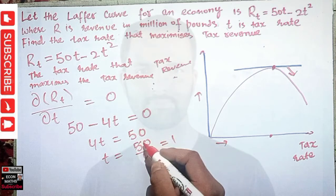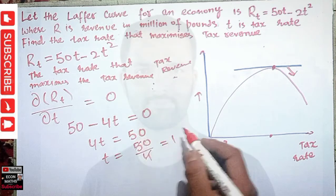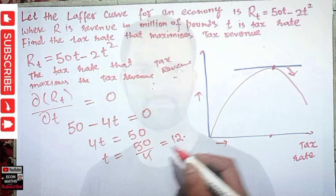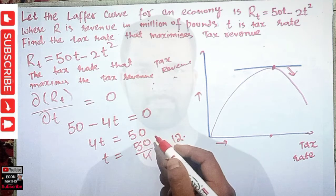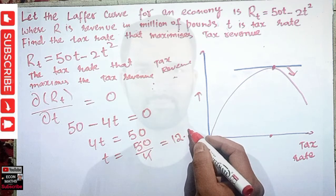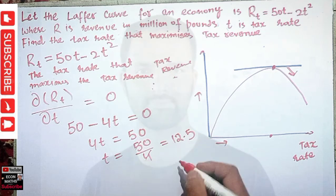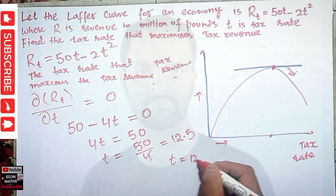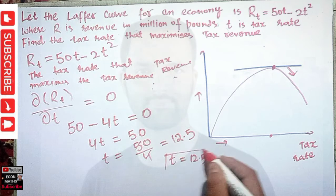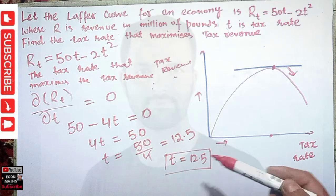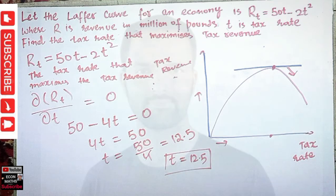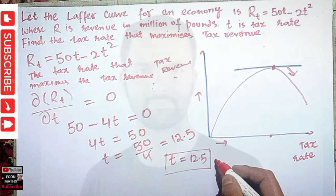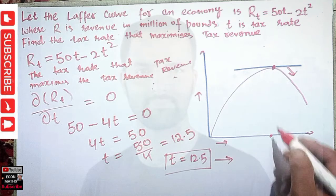Solving for t: 4t = 50, so t = 50/4 = 12.5. Therefore, a tax rate of 12.5% is the tax rate that maximizes the government's tax revenue. Going beyond that point will actually decrease the government's tax revenue.